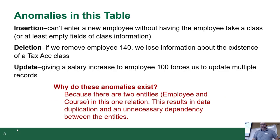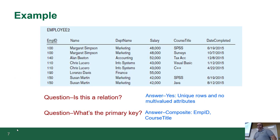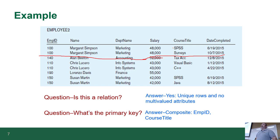If we're going to give a raise to employee 100, we have to update multiple records. Looking at employee 100 — the first two rows — because the database isn't normalized properly, she's in there twice because she took two different courses. She takes a third course, her record is in there three times. A fourth course, four times. That means you need to update the salary in more than one place.